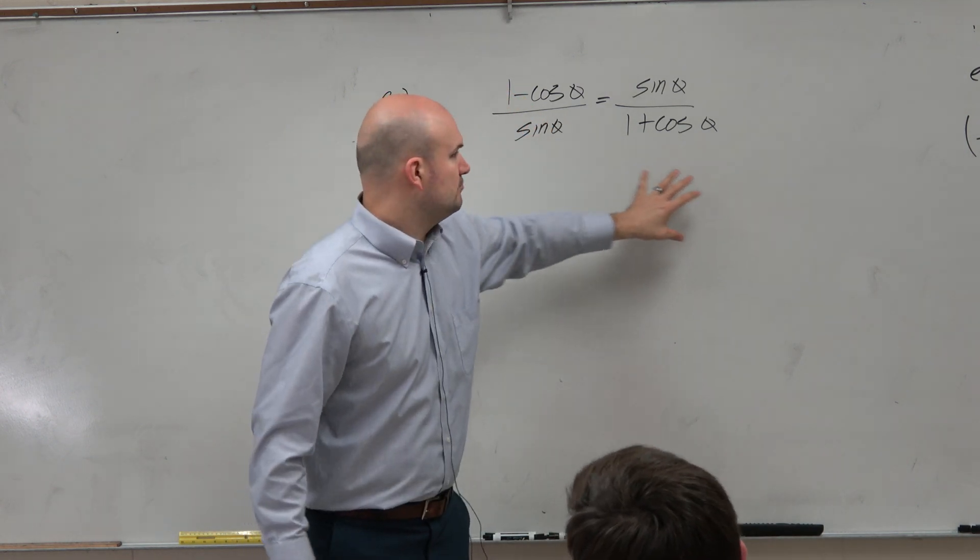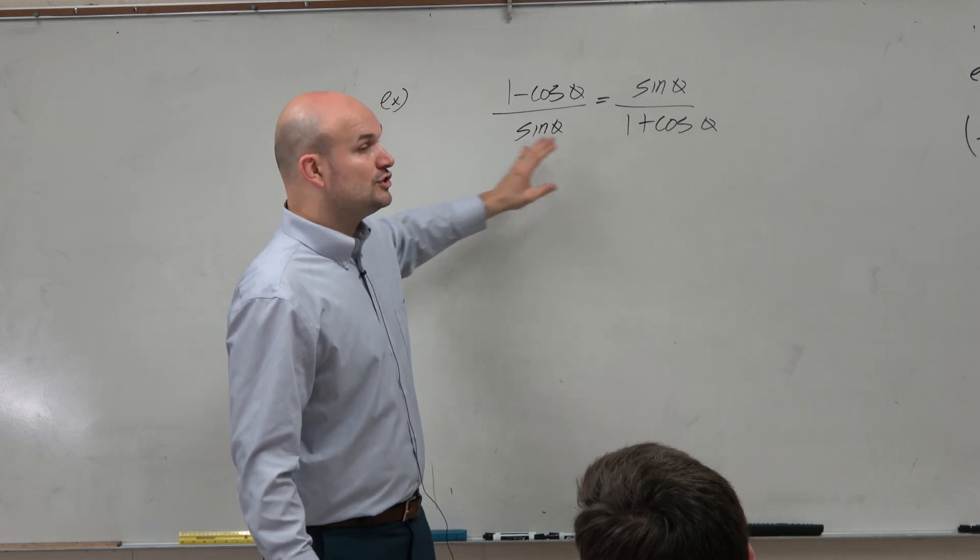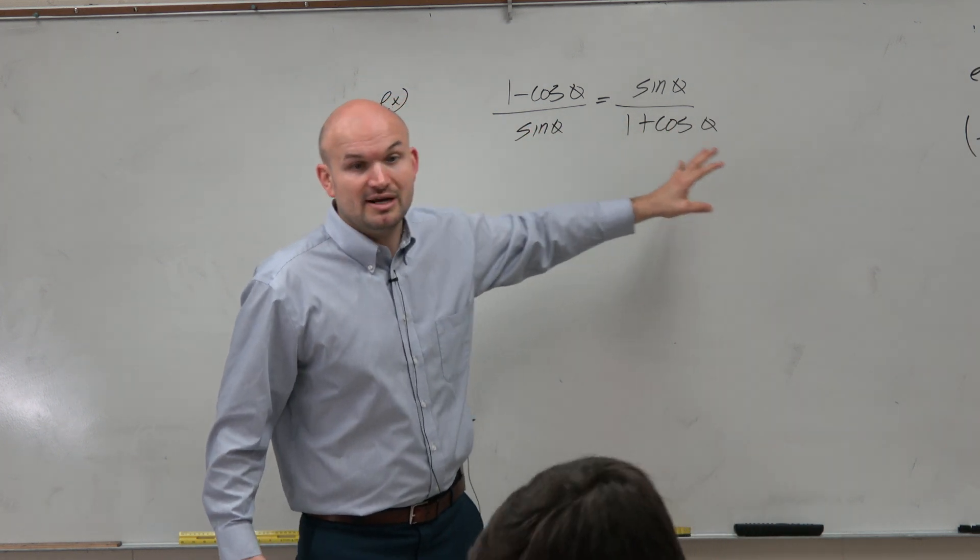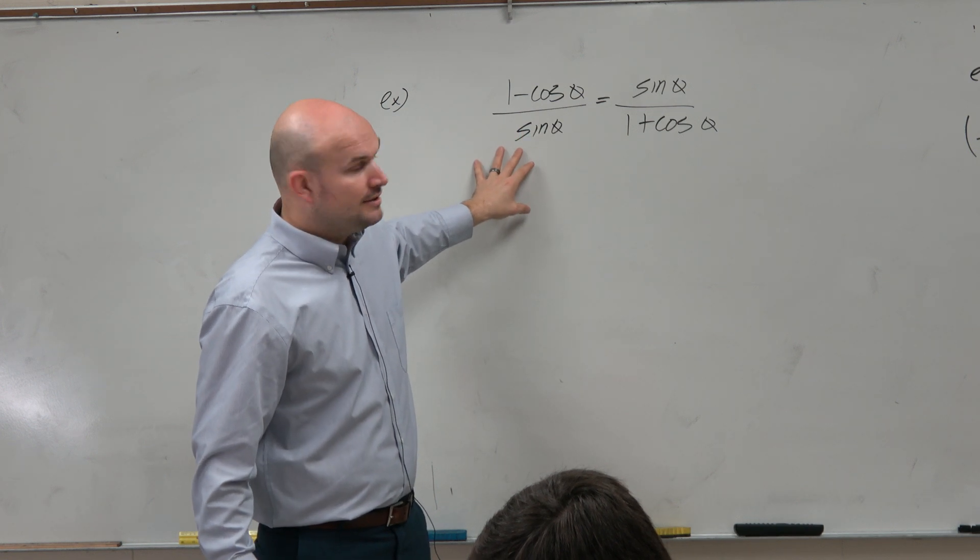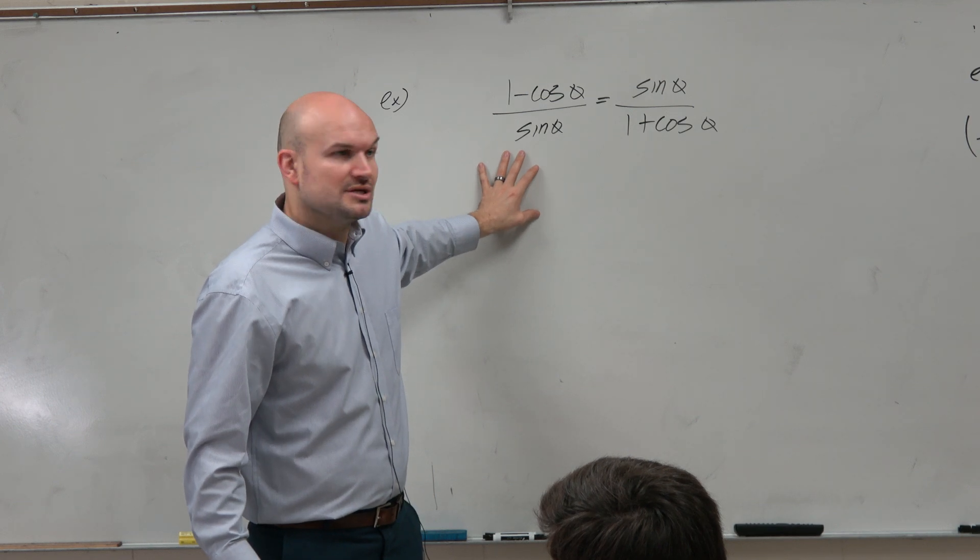Obviously, we have nothing going on with co-function identities. However, if I could create some Pythagorean identities, this could work. So how can we create Pythagorean identities? That comes into rationalizing.